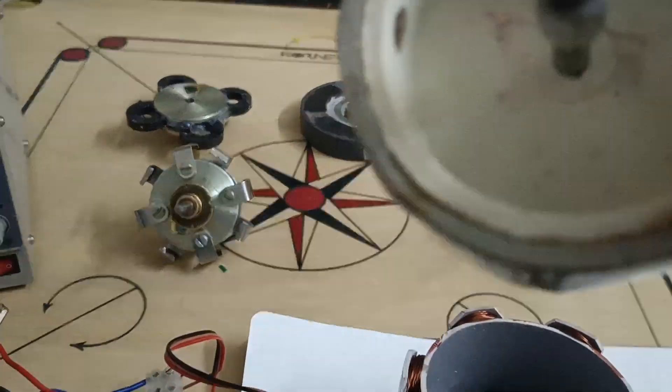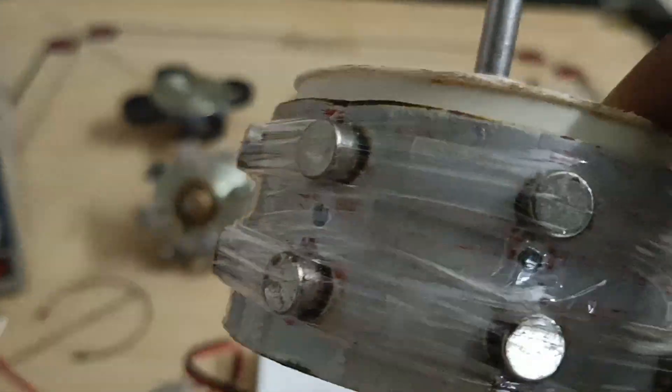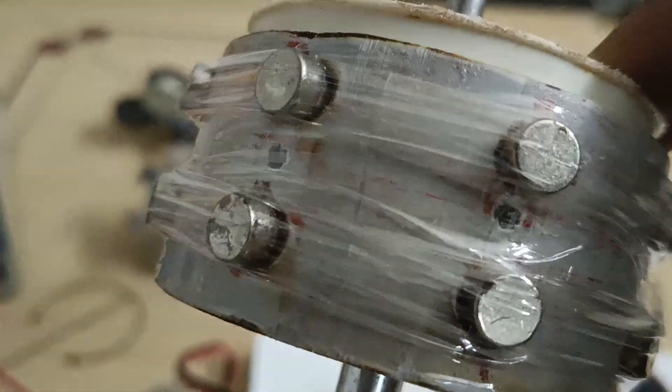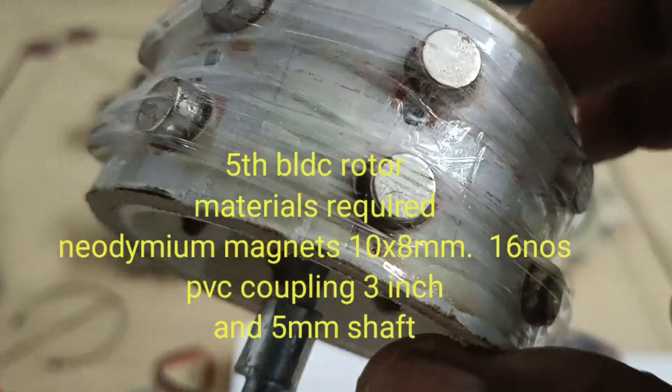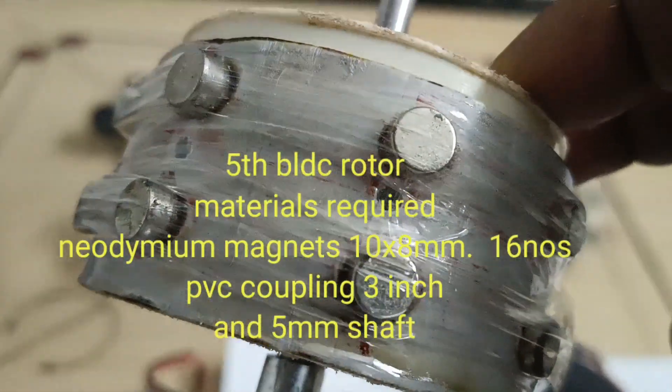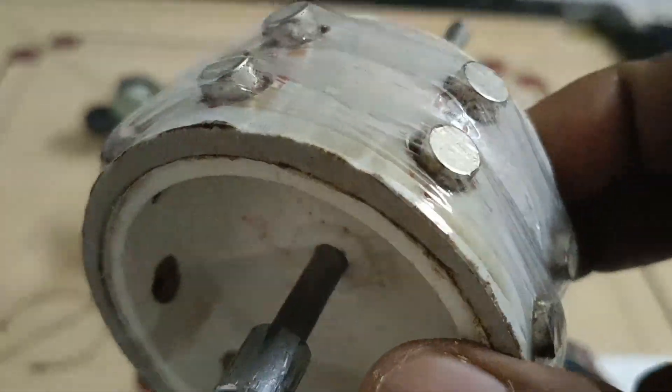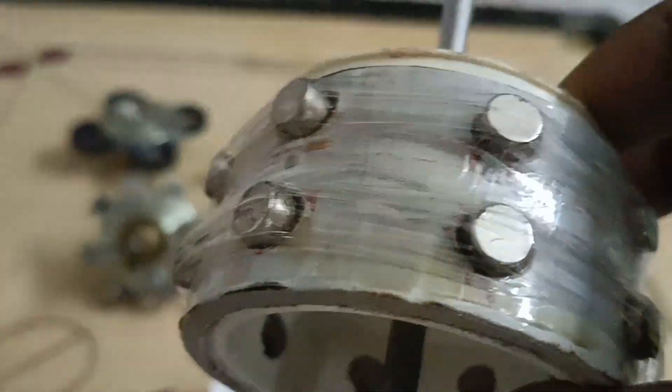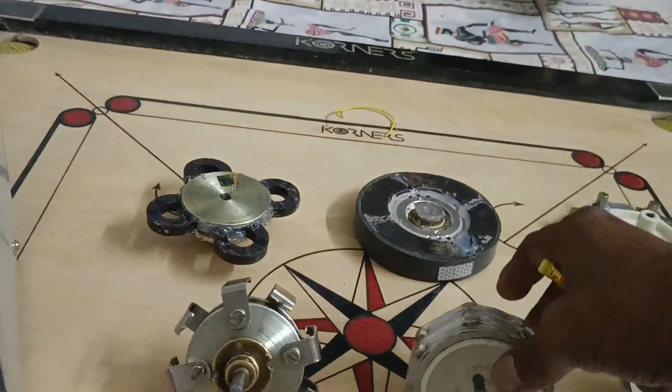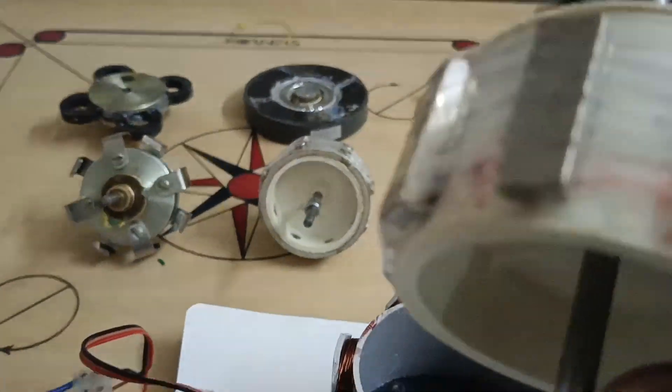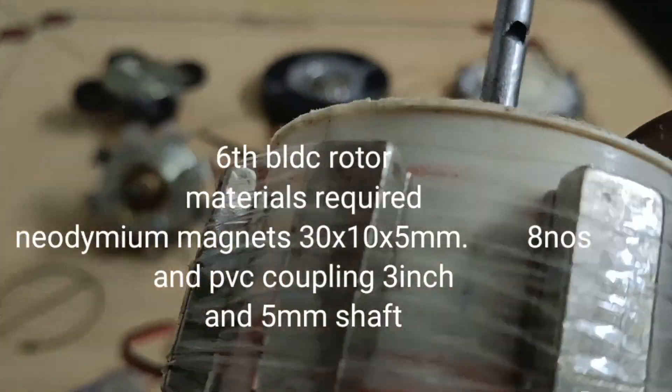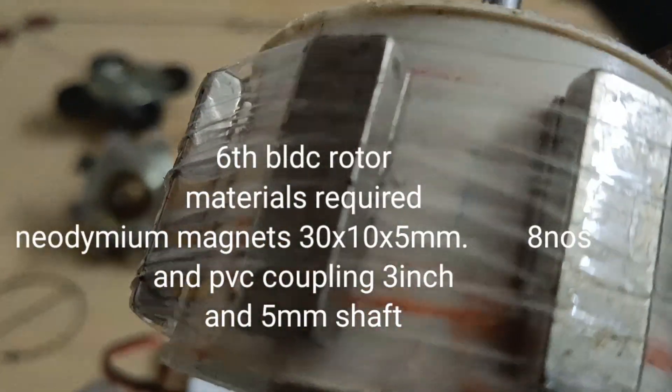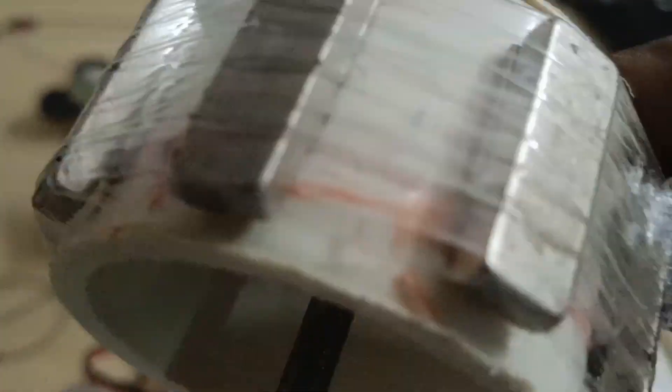And here's the fifth rotor. Here I'm using neodymium round magnets. The size of the magnets is eight millimeters by ten millimeters. Here each pole has two magnets. Here's the sixth rotor. The sixth rotor, I'm using the rectangle magnet size of ten by five by thirty millimeters.